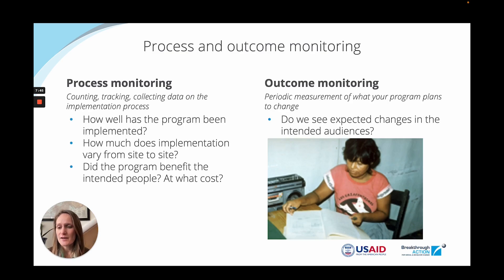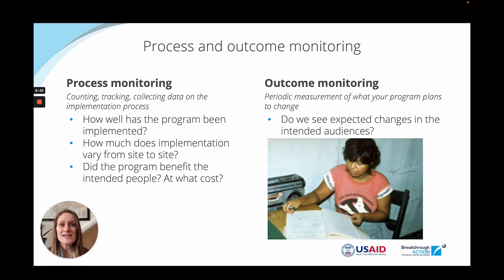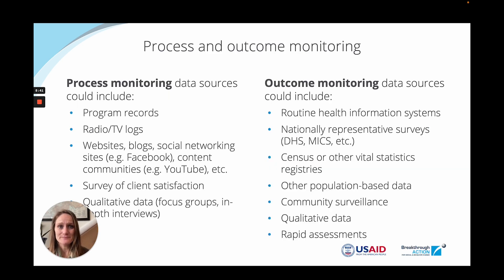One useful way of thinking about monitoring is breaking it into two pieces: first, process monitoring, and second, outcome monitoring. With process monitoring, we're talking about counting, tracking, or collecting data on the implementation process itself — how well is implementation going, how many people have been reached, are there variations by different types of people or locations, and what is the cost? In terms of outcome monitoring, this refers to monitoring the changes you might see in the outcomes you're expecting as part of your project — do you see the changes you're expecting, why or why not, and what could be improved?